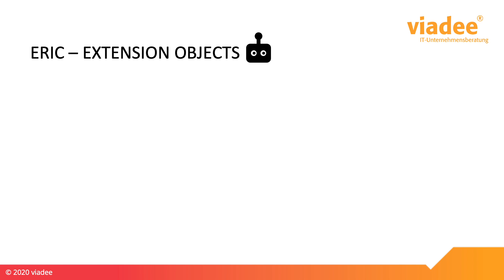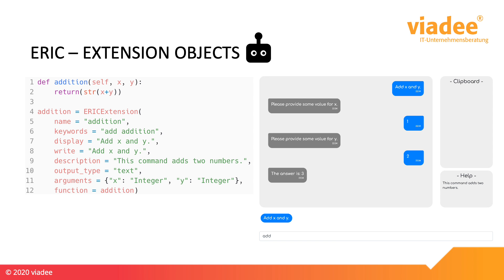What does this mean for extending existing functionality in ERIC? You could implement your own rules and corresponding Python functions to add new question types to the system. The rules would then run independently of the existing rules. But you have to learn both the Python language and the CLIPS programming language. So we created an alternative: you can make use of so-called ERIC extension objects, which are Python objects — providing extensibility by only using the Python language. For example, here we created a simple ERIC extension that requests the values for some variables x and y from the user and adds them together.